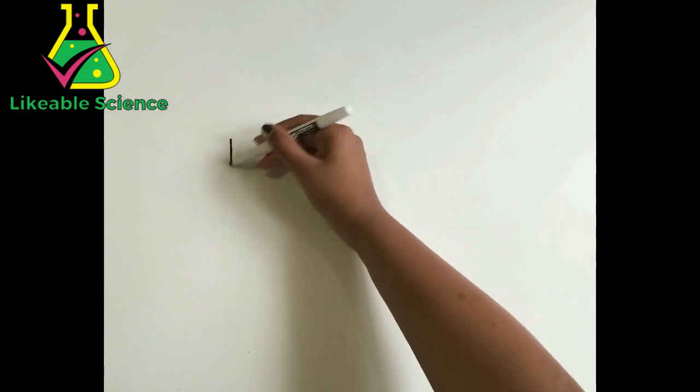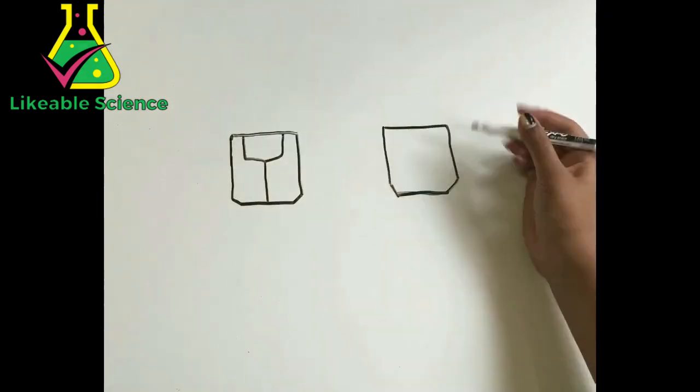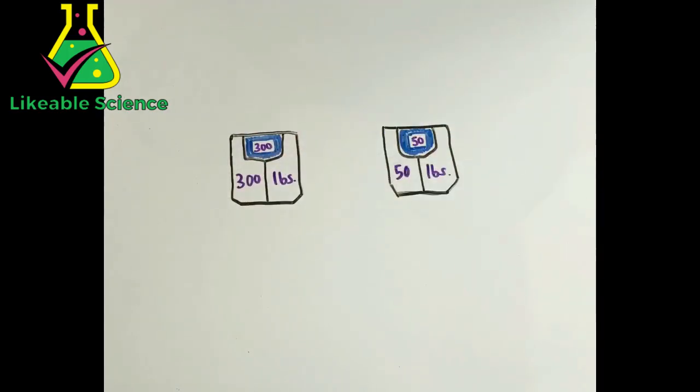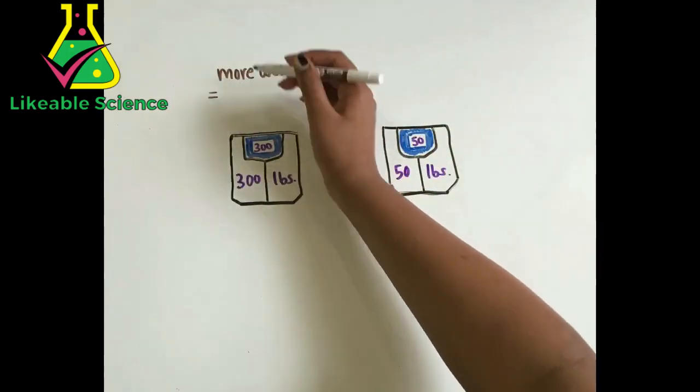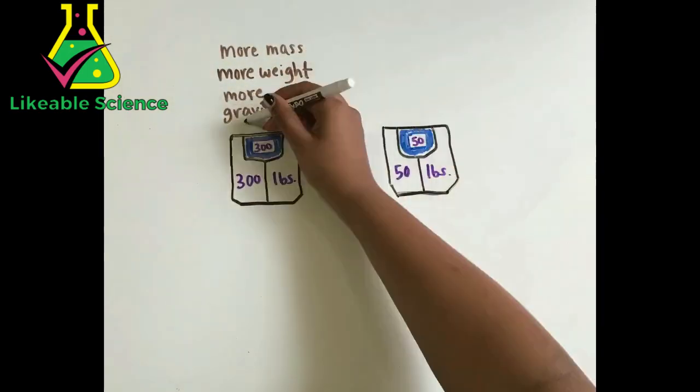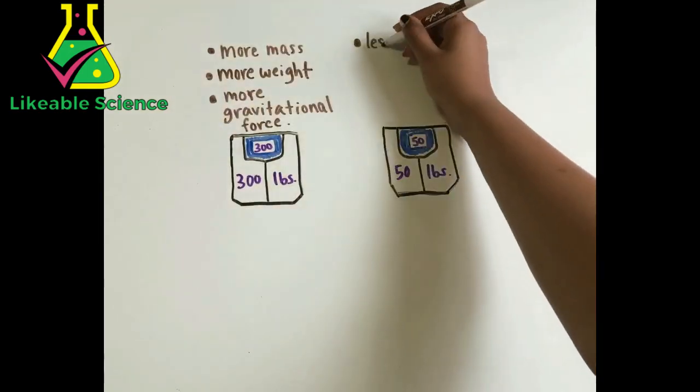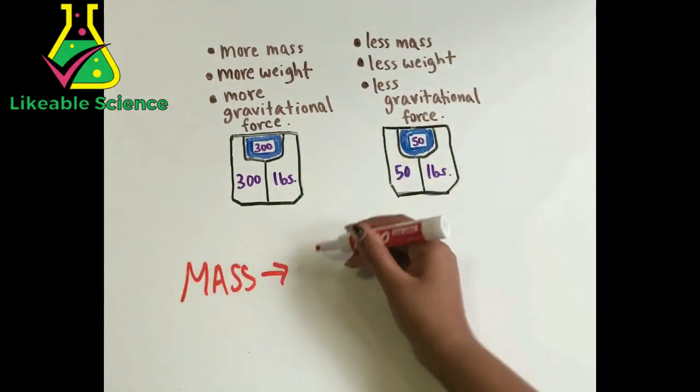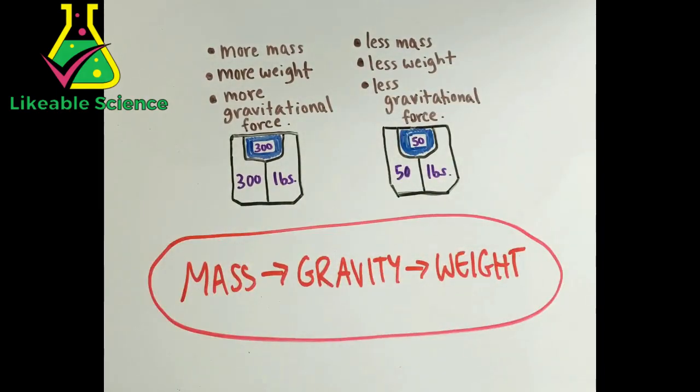Let's take stepping on a bathroom scale as an example. So if you have more weight, you have more mass and more gravitational force acting on you. If you have less weight, you have less mass and less gravitational force acting on you. This is how mass, gravity, and weight are all related.